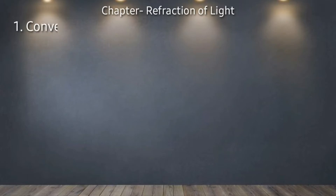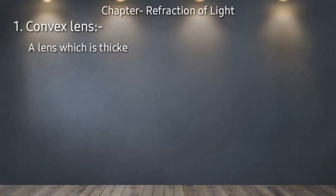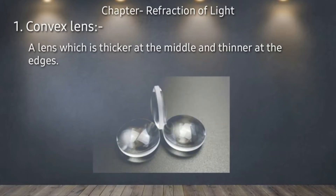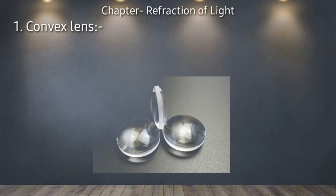Let's start with the convex lens. A lens which is thicker at the middle and thinner at the edges is called a convex lens. एक ऐसा lens जो बीच में से मोटे साइज़ का होता है और किनारों से पतला होता है, उसको convex lens कहा जाएगा।